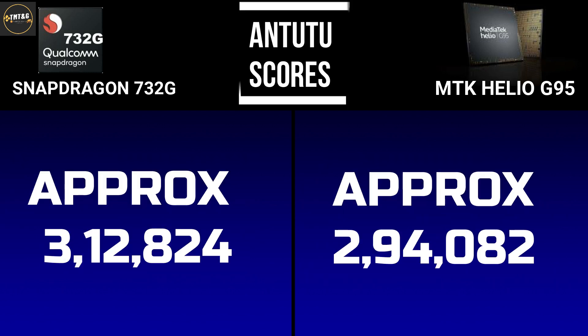For AnTuTu scores, the Snapdragon 732G scores approximately 312,824 points, whereas the Mediatek Helio G95 scores approximately 294,082 points. So the Snapdragon 732G is notably better in AnTuTu benchmark performance.